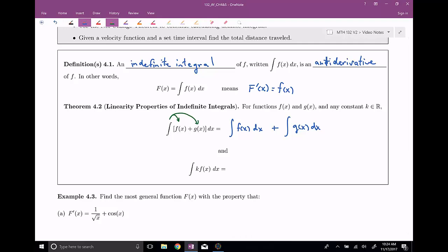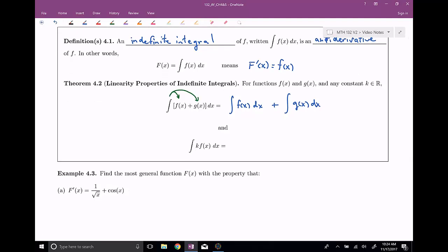Another property that anti-derivatives have, and therefore indefinite integrals have, is that you can factor out constants. So if you have a k value, you can factor that out of the integral, and then you just have the integral of f of x dx times k. And that's really all there is to it.